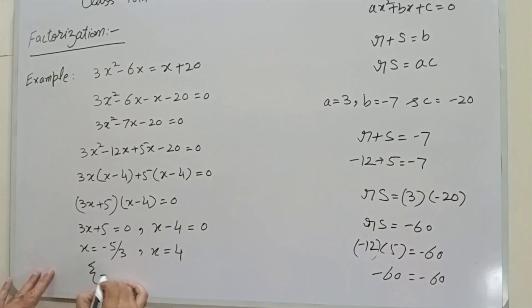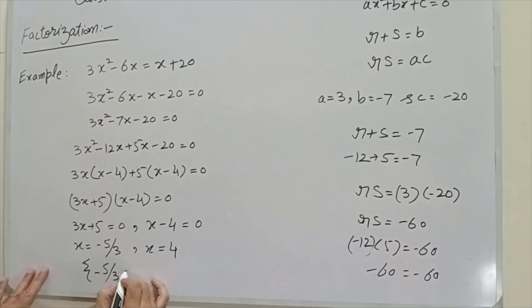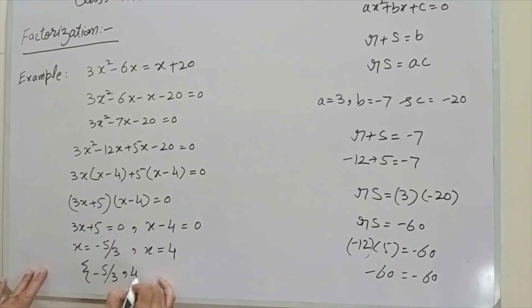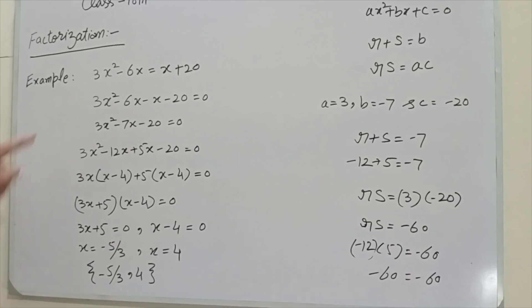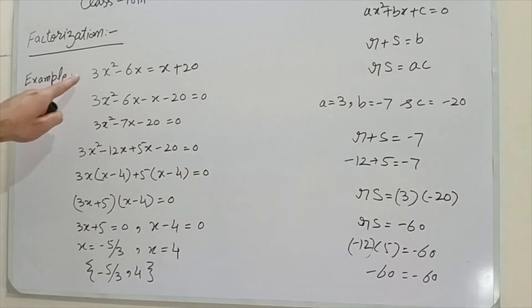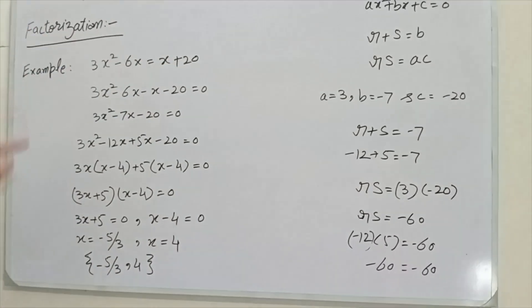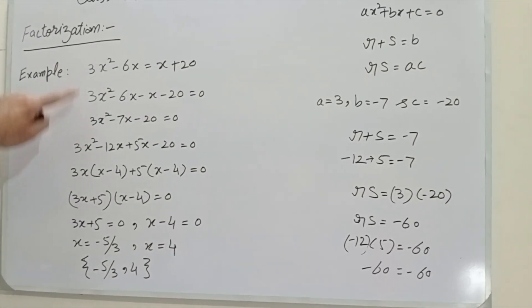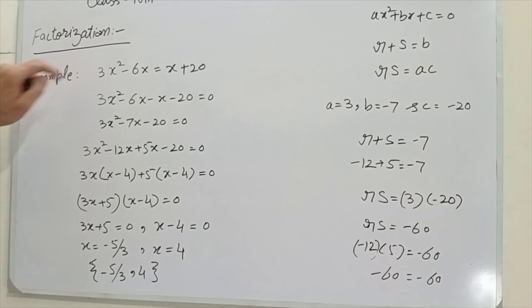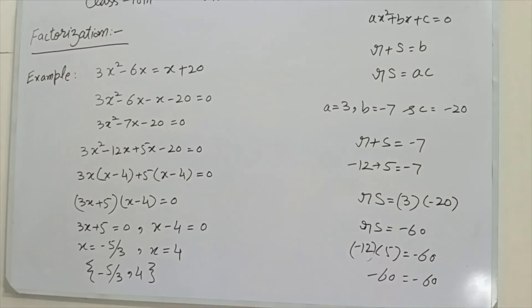So minus 5 over 3 and 4 are the solution set of this equation, which is in standard form.